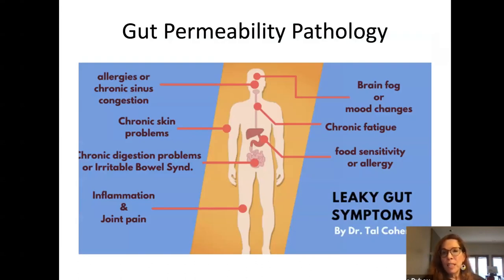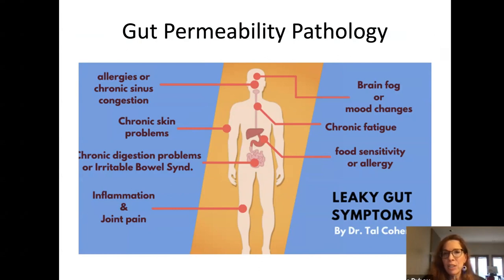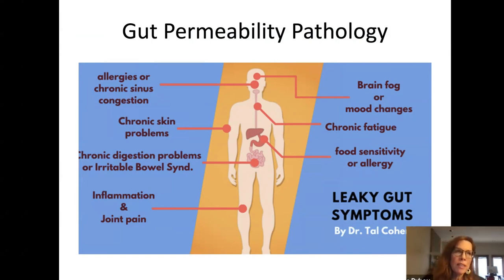Because motility is affected by small fiber neuropathy, there is very often constipation or outright gastroparesis, which can lead to stagnation of waste and result in an altered microbiome — what's been referred to as leaky gut, or increased gut permeability — causing all kinds of related symptoms.